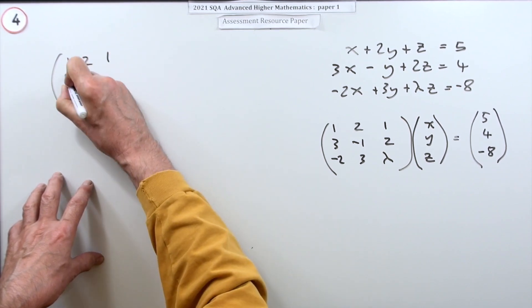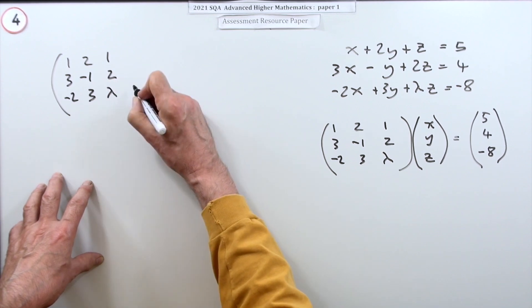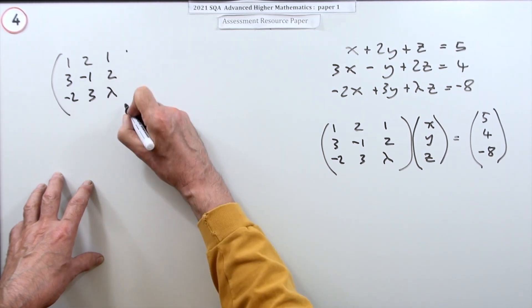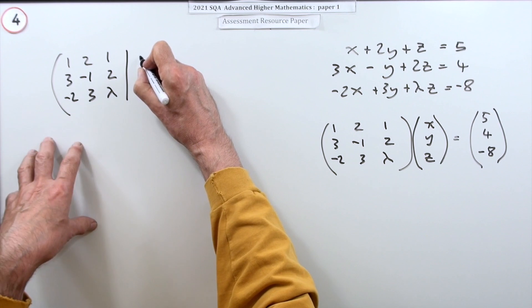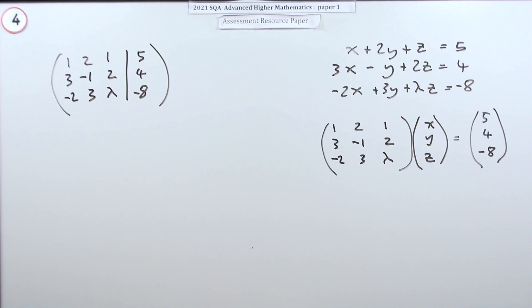1, 2, 1, 3, negative 1, 2, negative 2, 3, lambda. And you can either put a dotted line or just put a solid line. 5, 4, negative 8. So that's the two of them joined together.